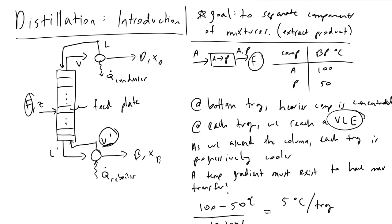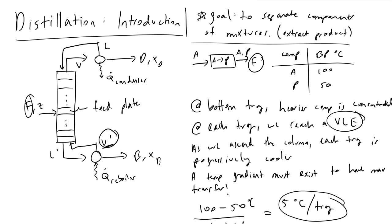In other words, it is 5°C colder for each tray ascending this binary system. Working with binary systems is convenient because you can do this kind of calculation and get an idea of the expected temperature gradient, though it becomes much more complicated with multi-component systems. For this introduction, with a 10-tray column, two components, and boiling points that are largely independent of pressure, we want to see a 5°C temperature drop per tray as we ascend.